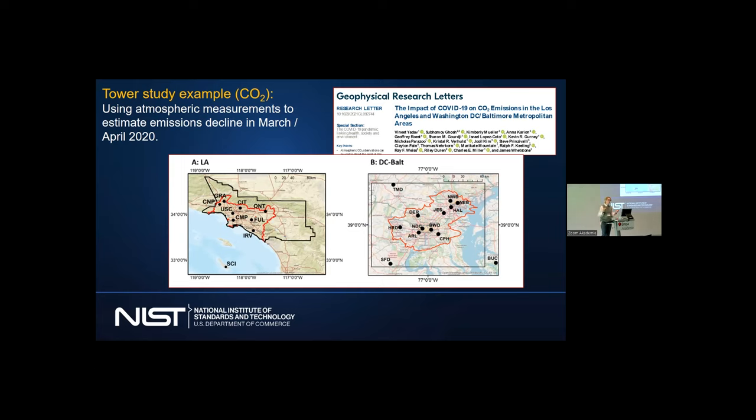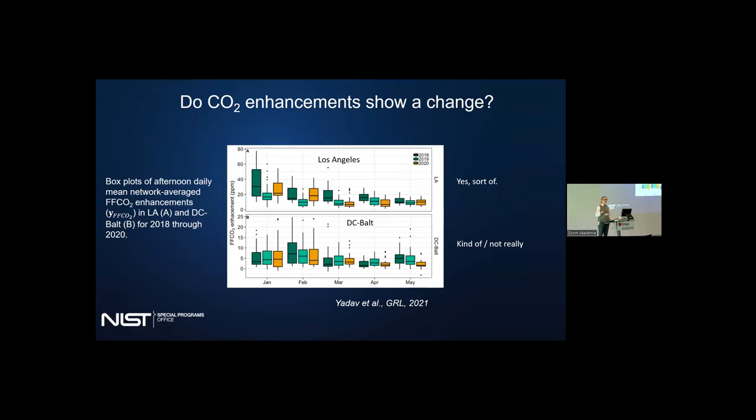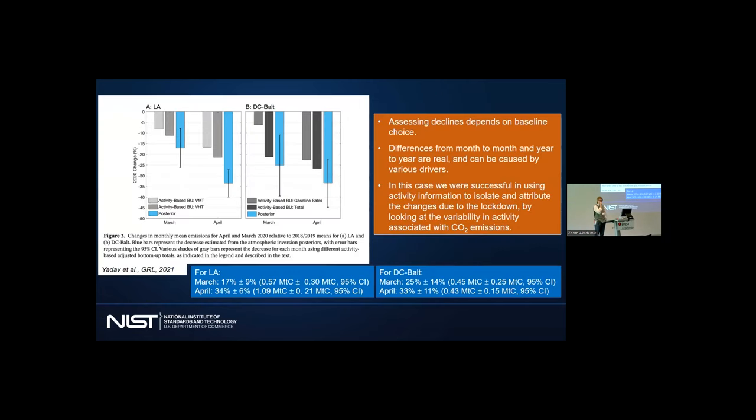Why would we do this? If you look at box plots of the afternoon daily mean network average fossil fuel enhancements for both L.A. and the D.C. Baltimore area for 2018 through 2020, and you try to eyeball to see if you can find a decrease within the interannual variability, you really can't, especially for Baltimore. It kind of looks that way for Los Angeles, but certainly not for Baltimore and Washington D.C. So we did an inversion.